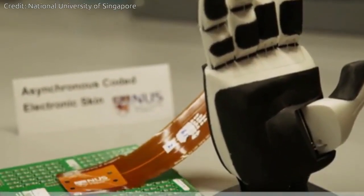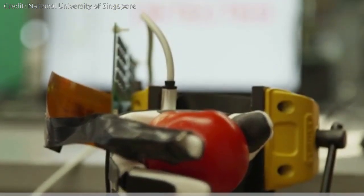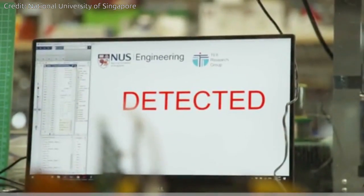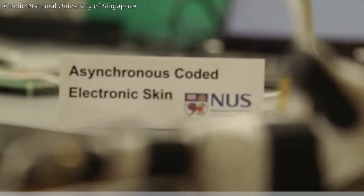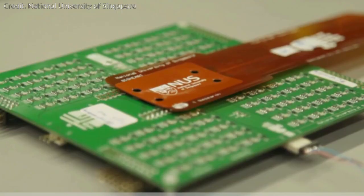Researchers from NUS have developed an ultra-responsive and robust artificial nervous system for e-skins. They named it Asynchronous Coded Electronic Skin.